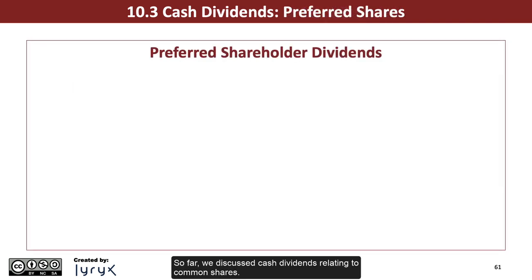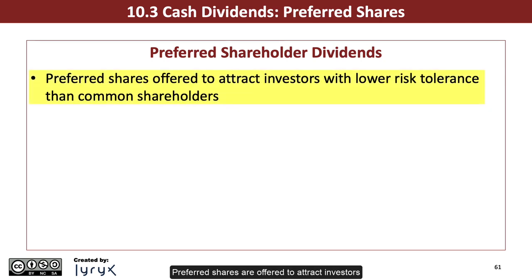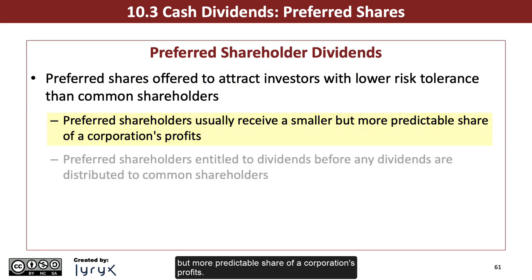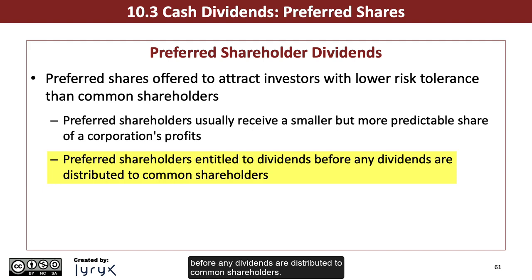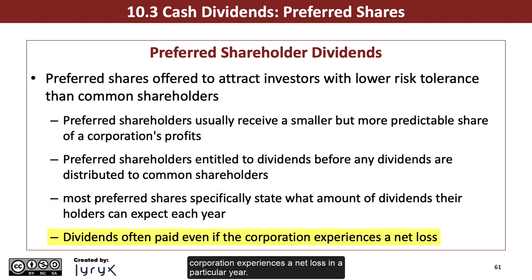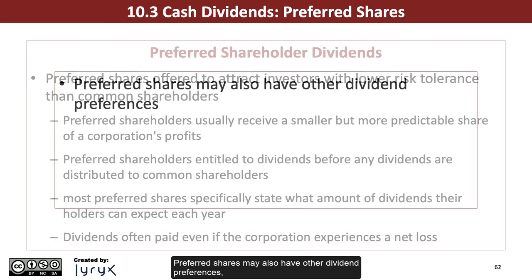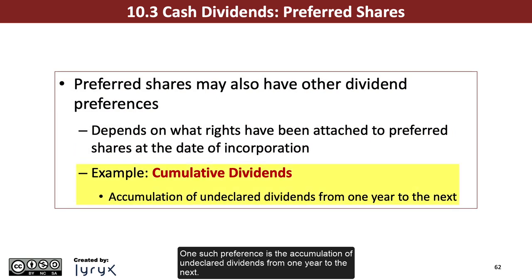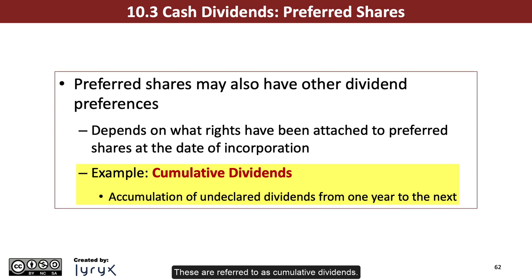So far we've discussed cash dividends relating to common shares. Let's now discuss preferred shareholder dividends. Preferred shares are offered to attract investors who have a lower tolerance for risk than do common shareholders. Preferred shareholders usually receive a smaller but more predictable share of a corporation's profits. Preferred shareholders are also entitled to dividends before any dividends are distributed to common shareholders. Most preferred shares specifically state what number of dividends their holders can expect each year. Preferred share dividends are often paid even if the corporation experiences a net loss in a particular year. Preferred shares may also have other dividend preferences, depending on what rights have been attached to preferred shares at the date of incorporation. One such preference is the accumulation of undeclared dividends from one year to the next. These are referred to as cumulative dividends.